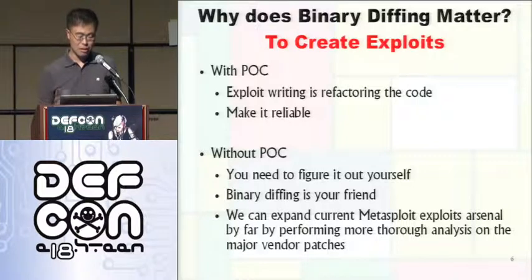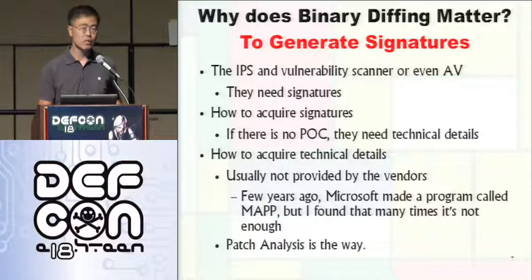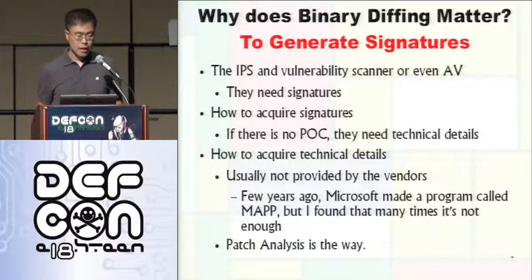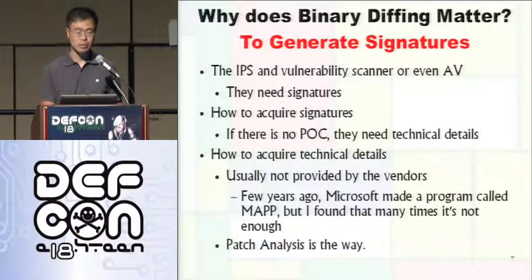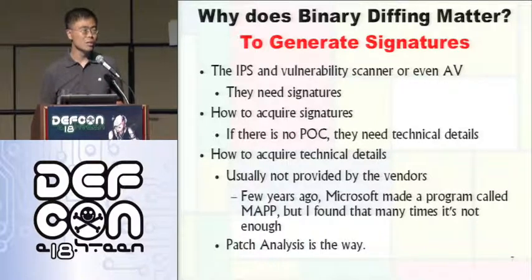Maybe people will start to look into binary diffing and the Metasploit arsenal will increase. The other use for binary diffing is generating signatures. With the same technology you can create exploits or create defense mechanisms. IPS, vulnerability scanners, and even AV use signatures to detect attacking binaries or exploits. If there is any POC, they can use it as a signature template. But if there is no POC, where will they get the information?